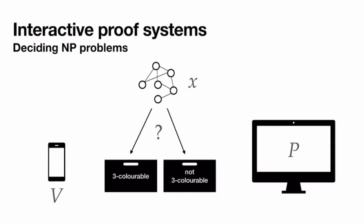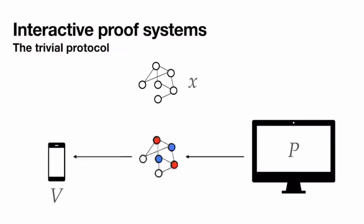Formally, we want two properties from this protocol: soundness and zero-knowledge. Soundness means the prover, even though it's unbounded, can't convince the verifier with high probability that x is three-colorable if it's not. This is easy to achieve — there's a trivial protocol where the prover simply sends the coloring and the verifier checks each edge. But we're doing cryptography, so maybe the three-coloring encodes some state secret and we don't want the verifier to know the coloring — only whether x is three-colorable.